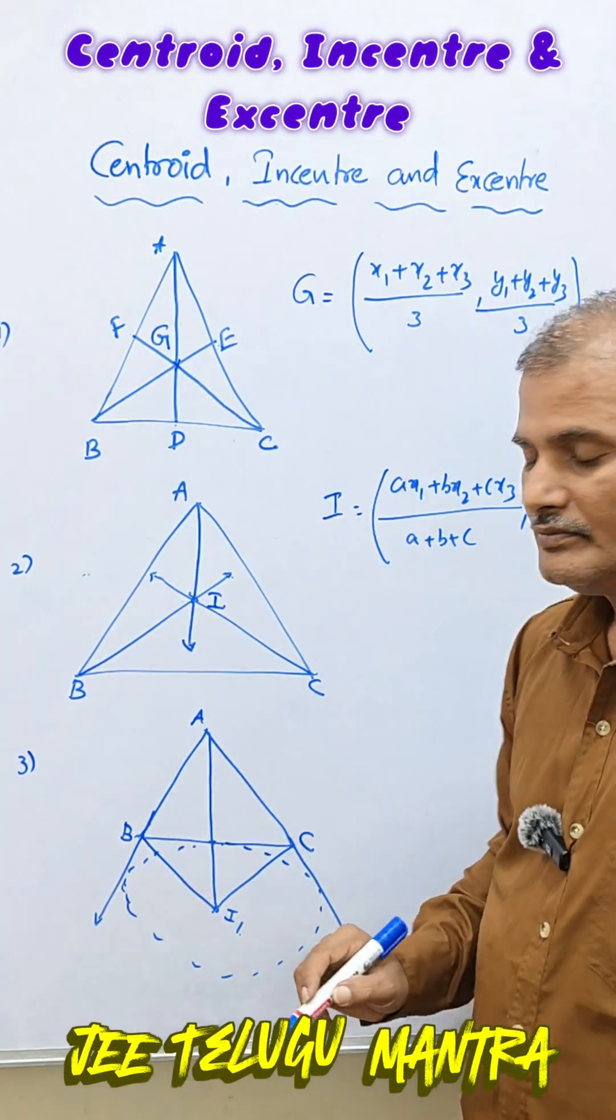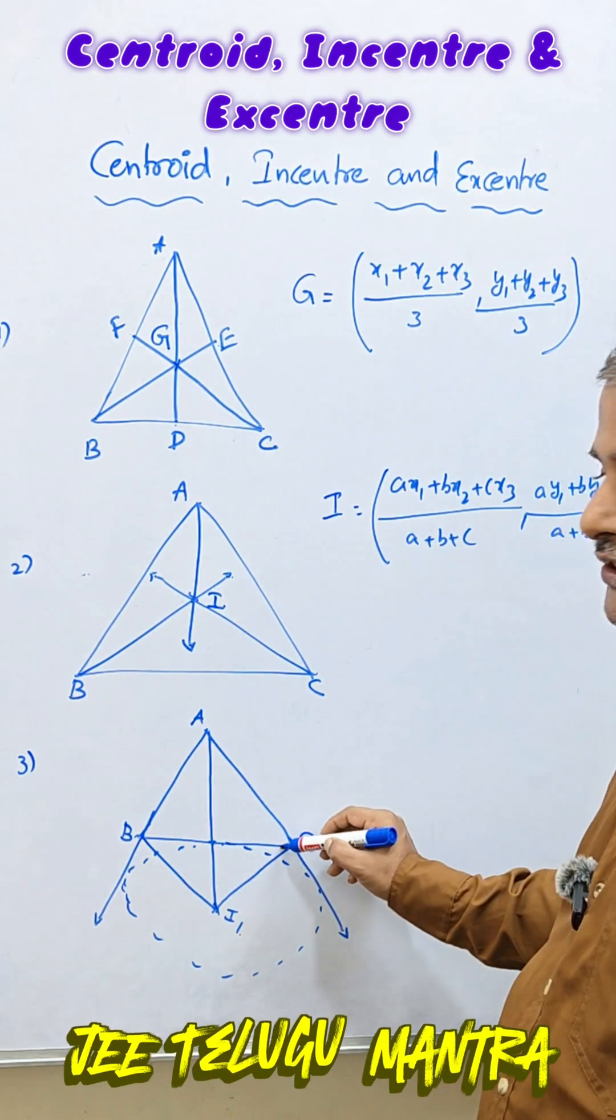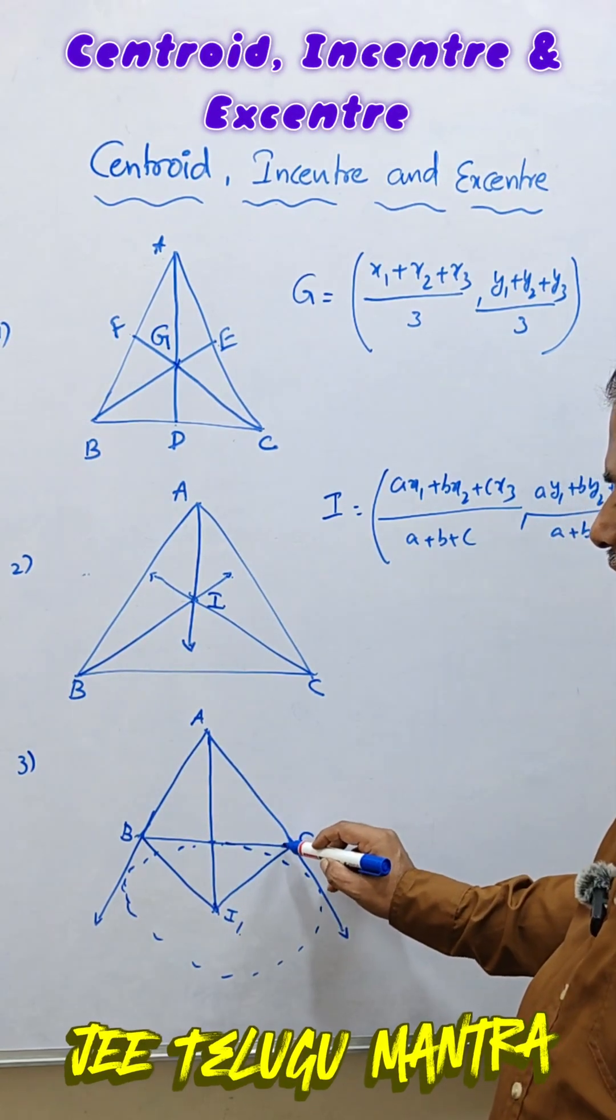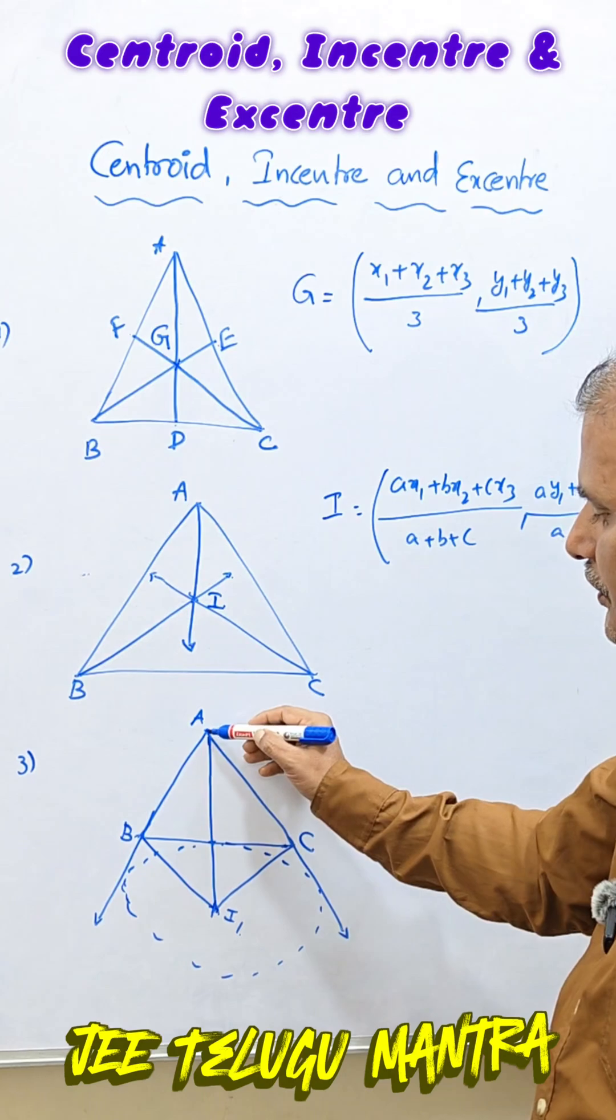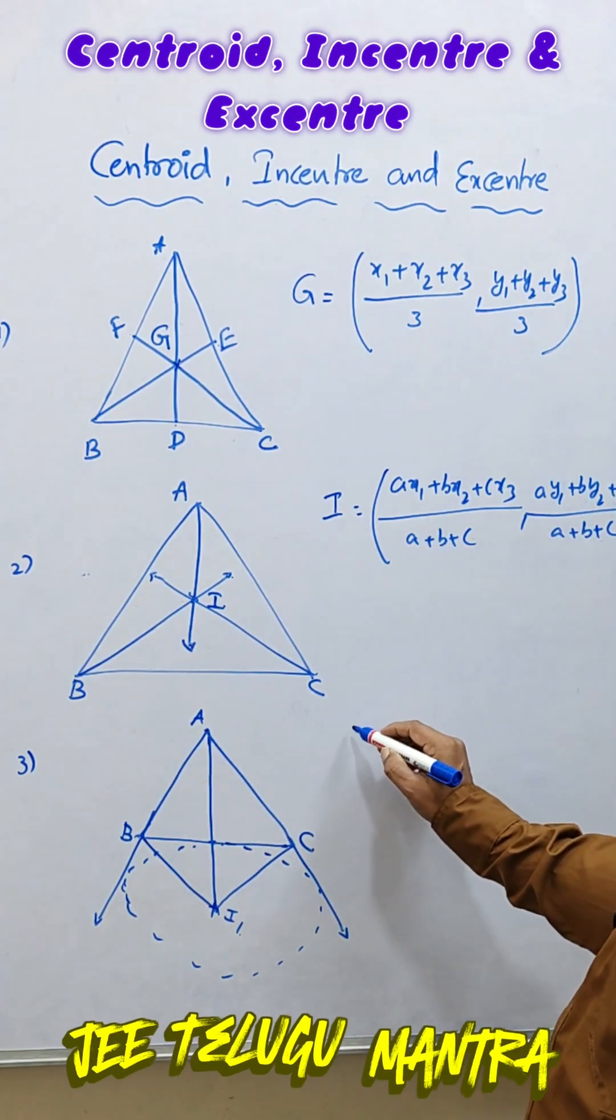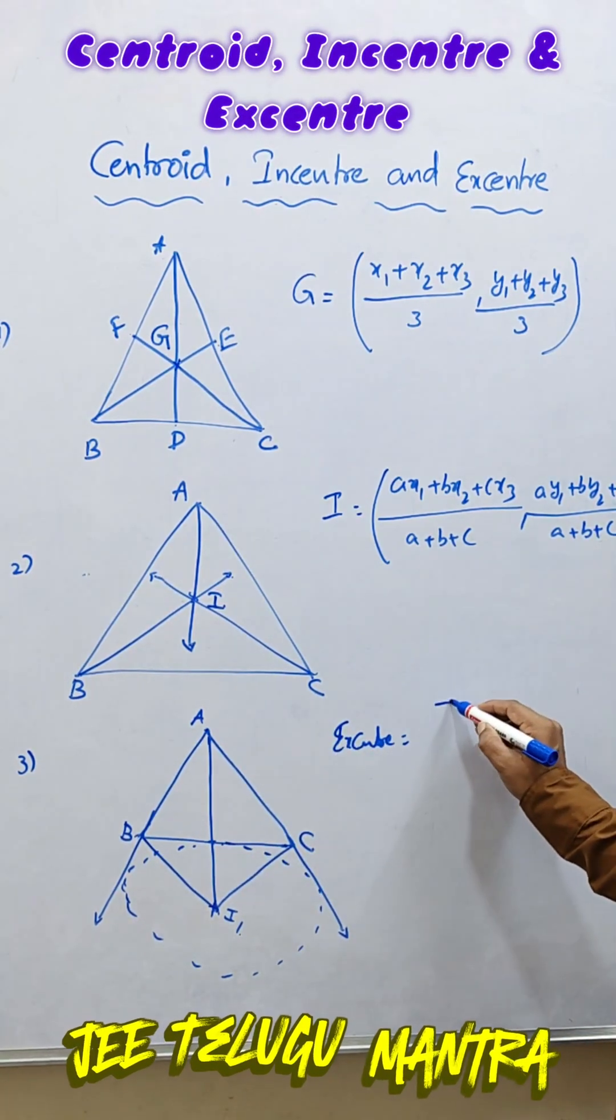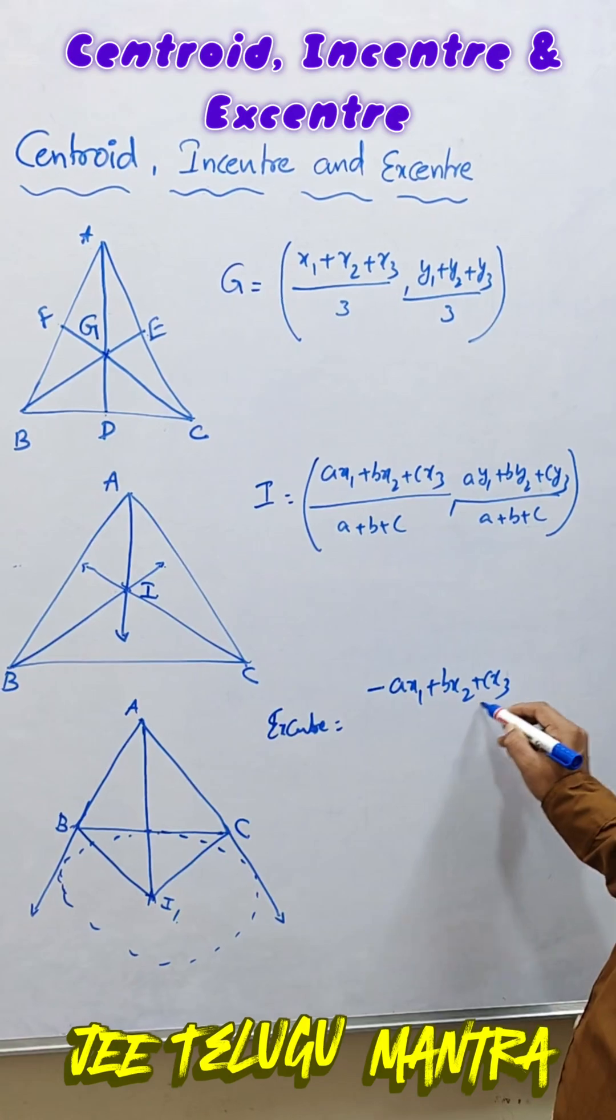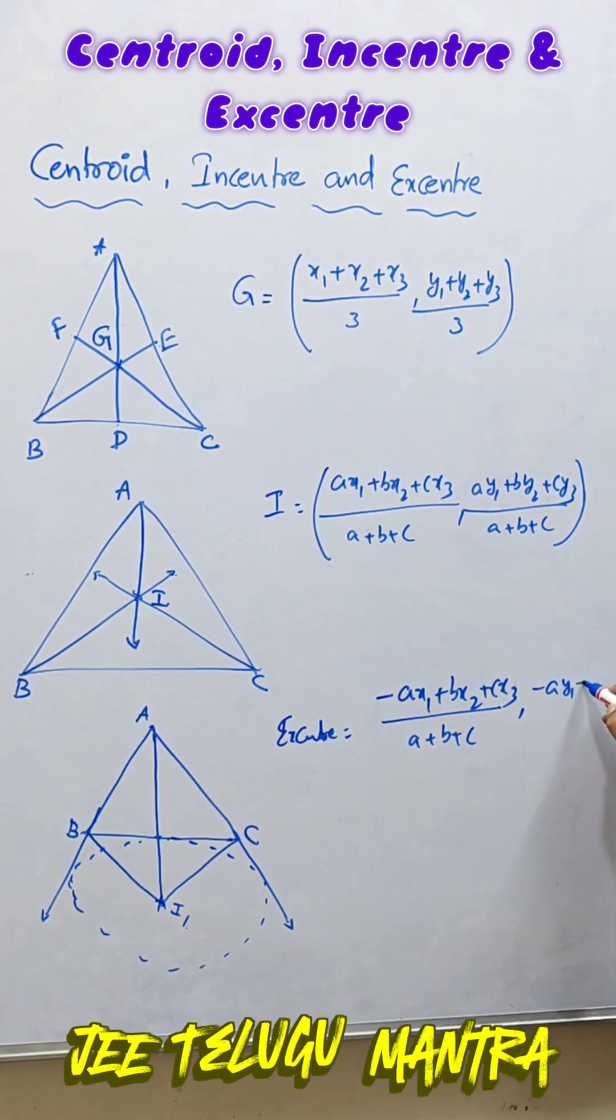And third one is ex-centre. Ex-centre means the point of concurrence of internal bisector and two external bisectors. One internal bisector from angle A and two external bisectors of angle B and angle C. Here I talked about only the vertices of A to the ex-centre I1. Therefore opposite to vertex A, the ex-centre formula is I1 is opposite to angle A, therefore you should take it as negative of A. The same formula we apply for the in-centre but here just negative is added.